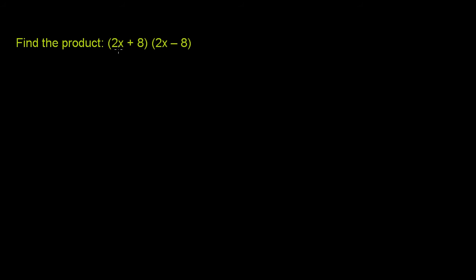We're asked to find the product 2x plus 8 times 2x minus 8. So there's two ways to do it. We can just multiply it out like we've always done. But this is actually a special pattern.